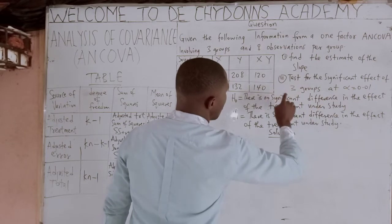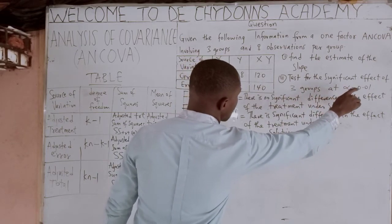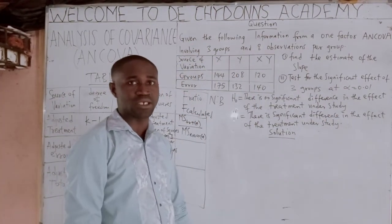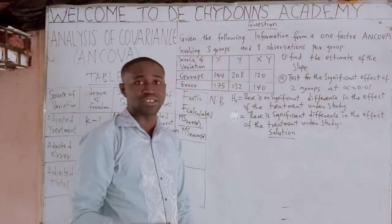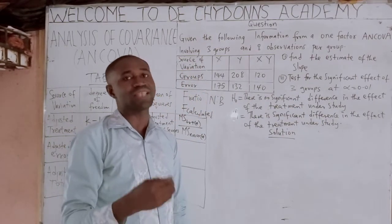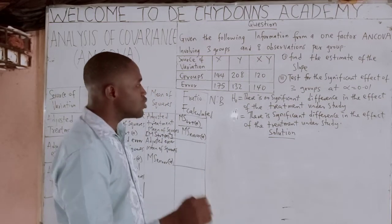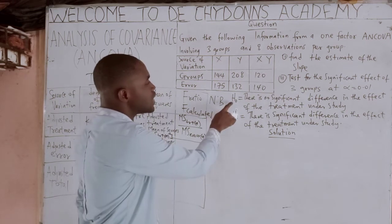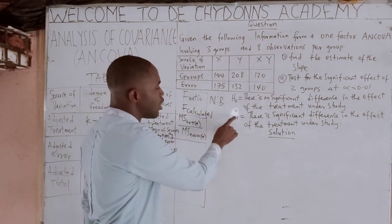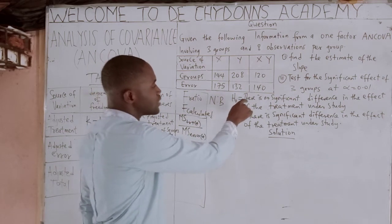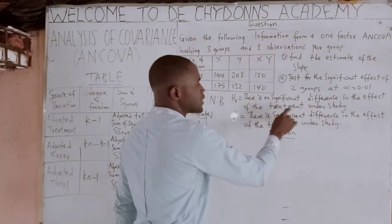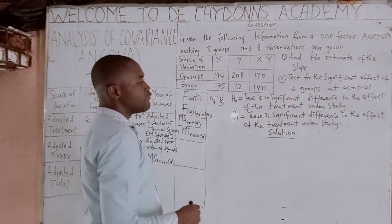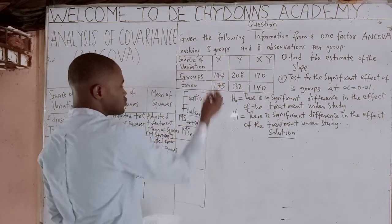Test for significant effect of three groups at alpha equal to 0.01. This alpha is called the level of significance, which is the maximum probability with which we will likely make a type 1 error. So what you now do is state H0 and H1. H0 is the null hypothesis — there is no significant difference in the effect of the treatment on the study. H1 is the alternative hypothesis — there is a significant difference. Draw the table again.